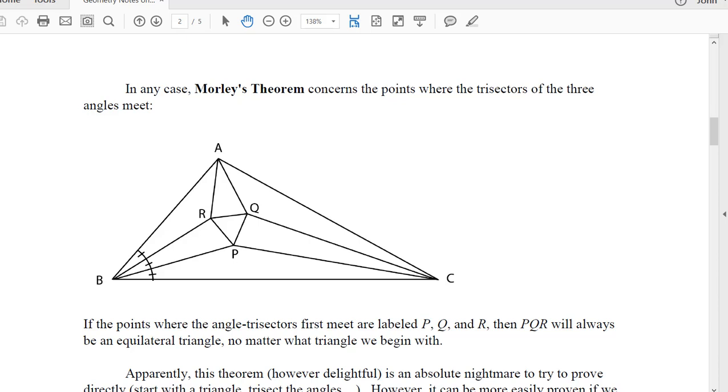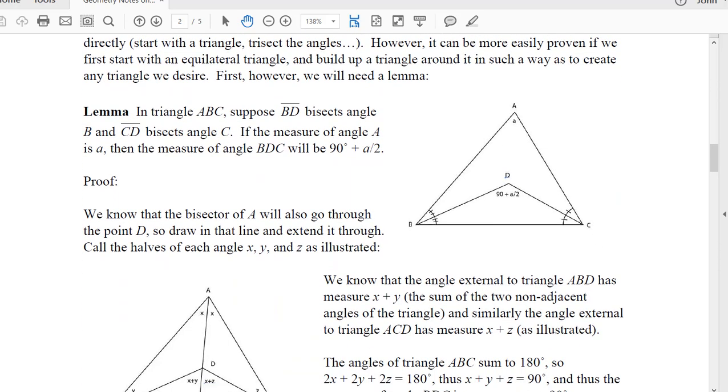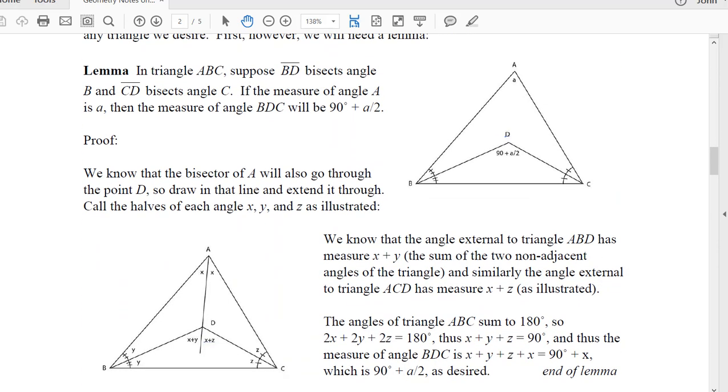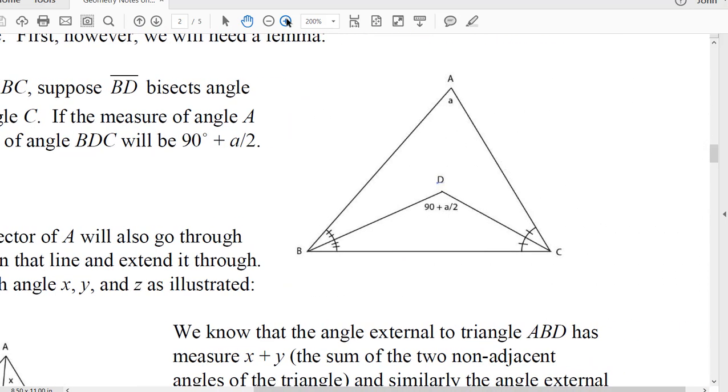There is a lemma that we're going to use, and I kind of misstated it here. I say that if we bisect B and bisect C, then this angle where they meet is going to be 90 degrees plus half of A.